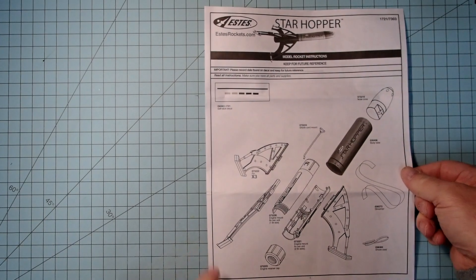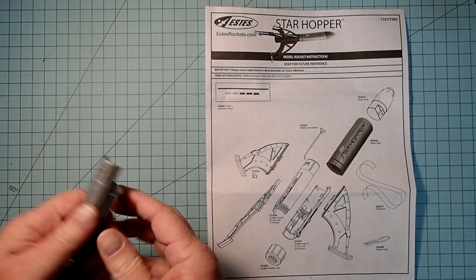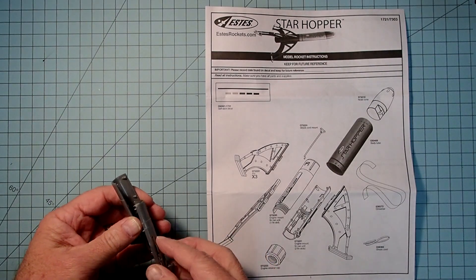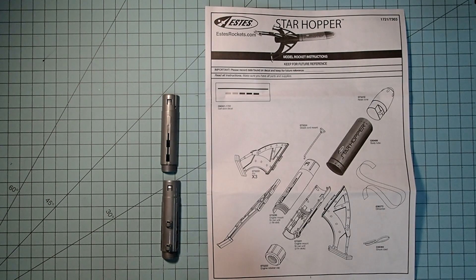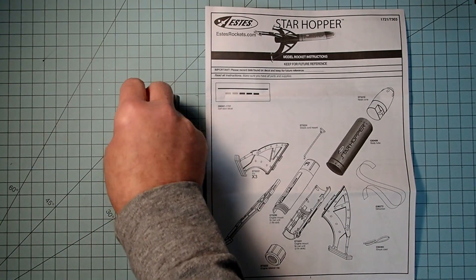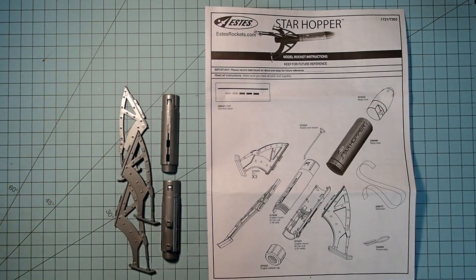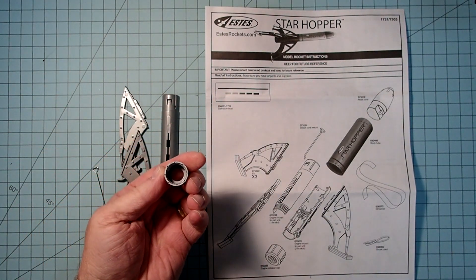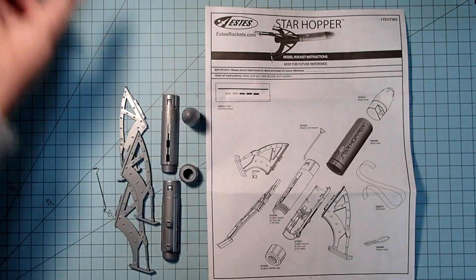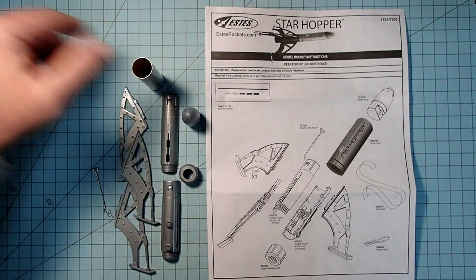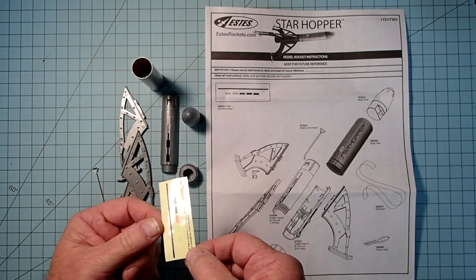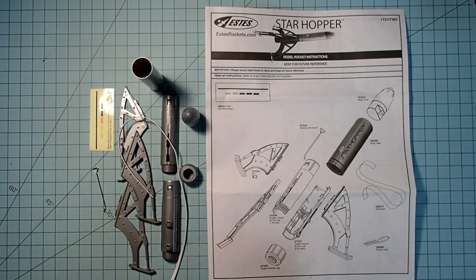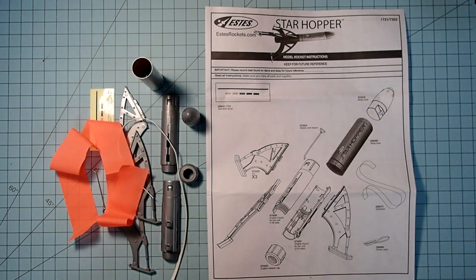As always we want to check our parts list against what actually comes in the package. We have a two-piece engine mount and fin can or fin assembly and then the fins that go on to that, also doubling as landing legs. This piece is the shock cord mount. It kind of looks like an engine hook but it's actually there to mount the shock cord. In place of an engine hook we have a plastic engine retainer, the nose cone and the body tube that is pre-colored. We have a very small decal pack and our shock cord and streamer. It doesn't look like we're missing anything, so I'm going to clear this away and we will get started.